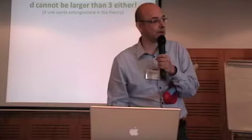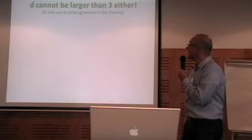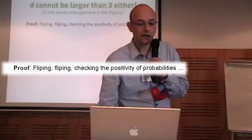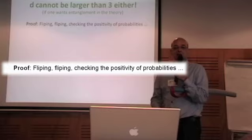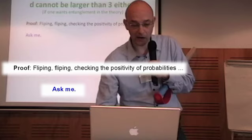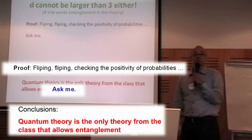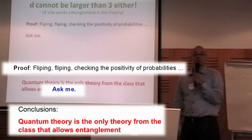Now I'm coming to the last slide. I just tell you that d cannot be larger than 3 either. The way how you can prove this is by flipping different Bloch vector components and checking for the positivity of probabilities. But if you want more details, you can ask me afterwards. I'm coming to the conclusion that quantum theory is the only theory within the class considered that would allow entanglement. Thank you very much.